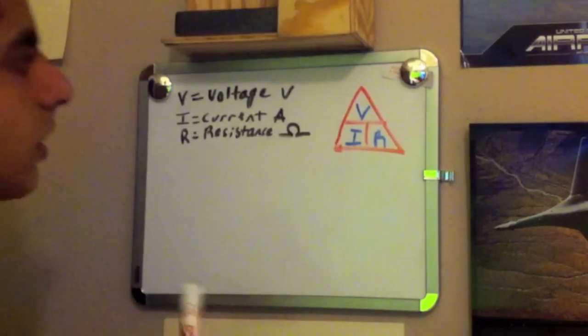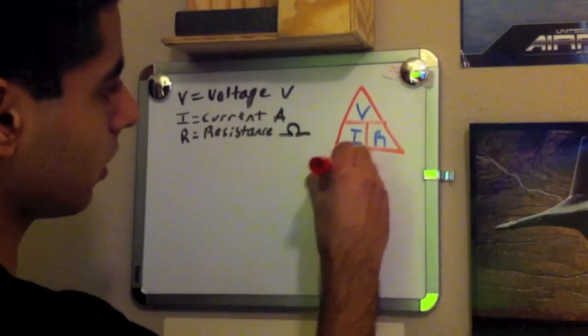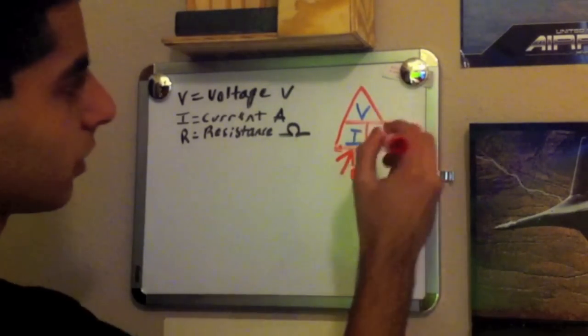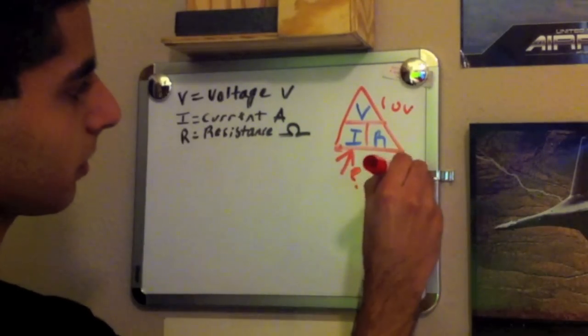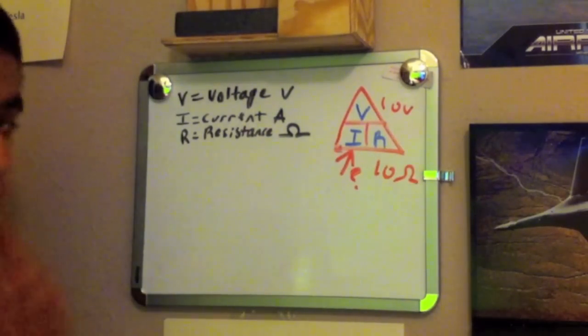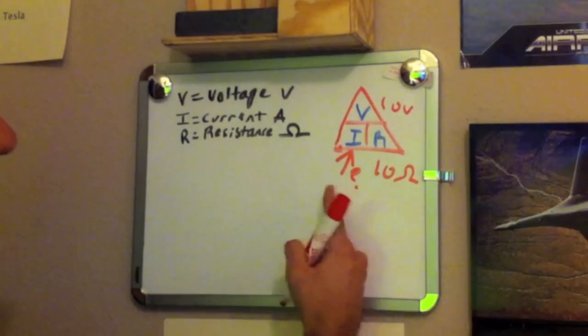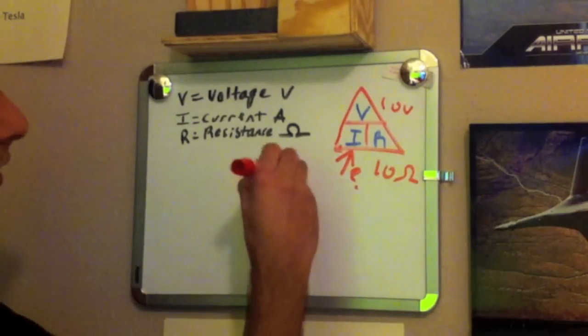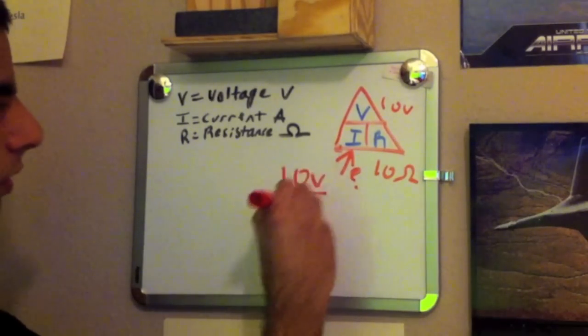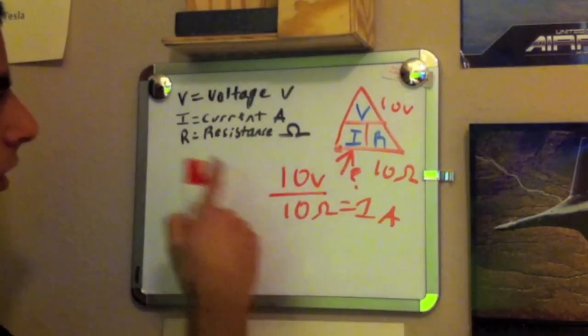So, to further simplify it, let's say we wanted to find current, and we knew our voltage was 10 volts and we knew our resistance was 10 ohms. We would simply divide 10 volts by 10 ohms to find how much current is going through the circuit. So again, 10 volts divided by 10 ohms equals 1 amp, which is the unit of current.